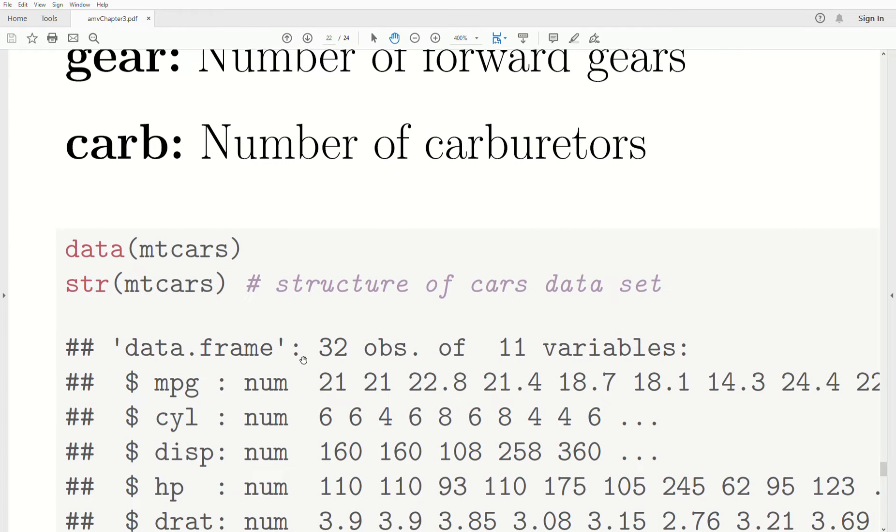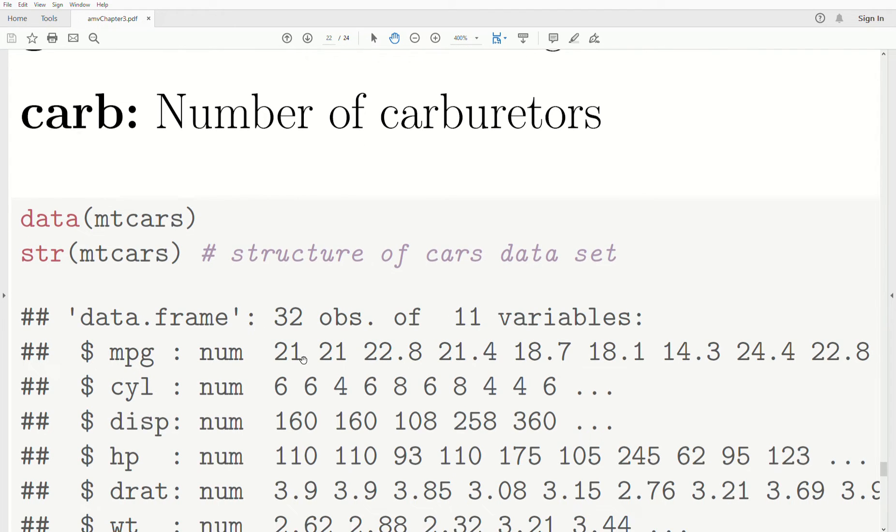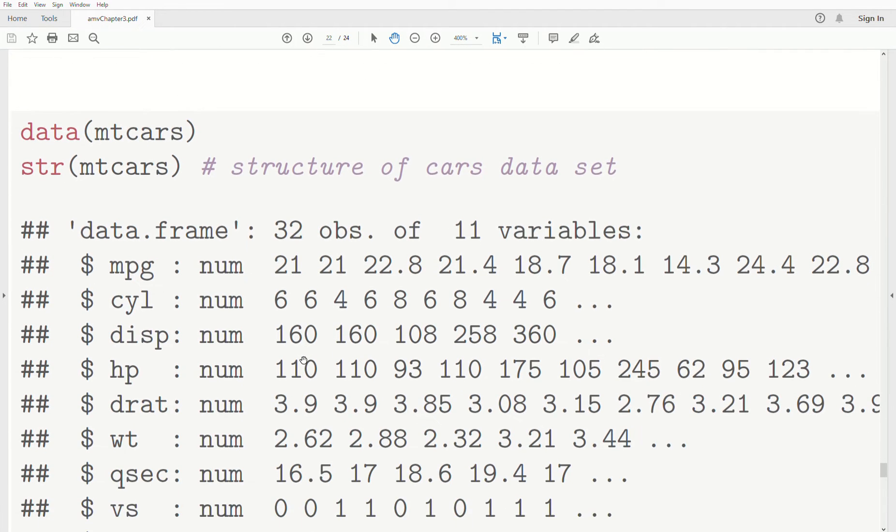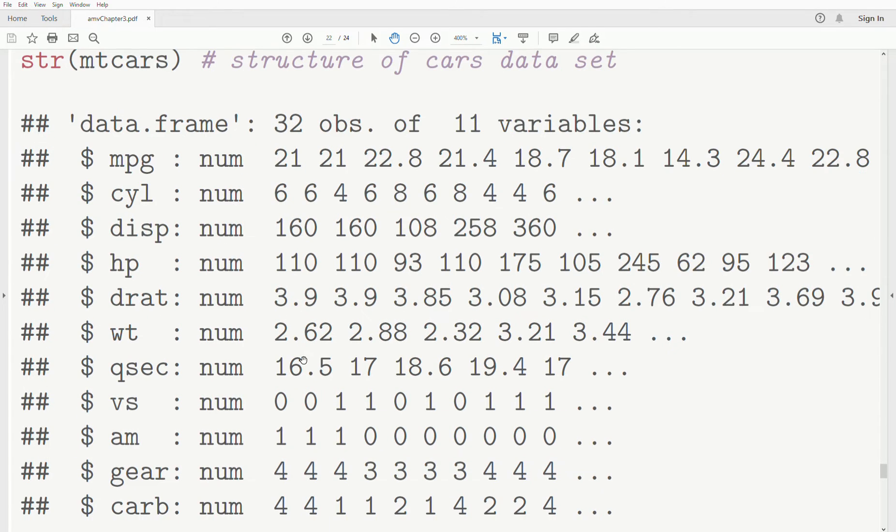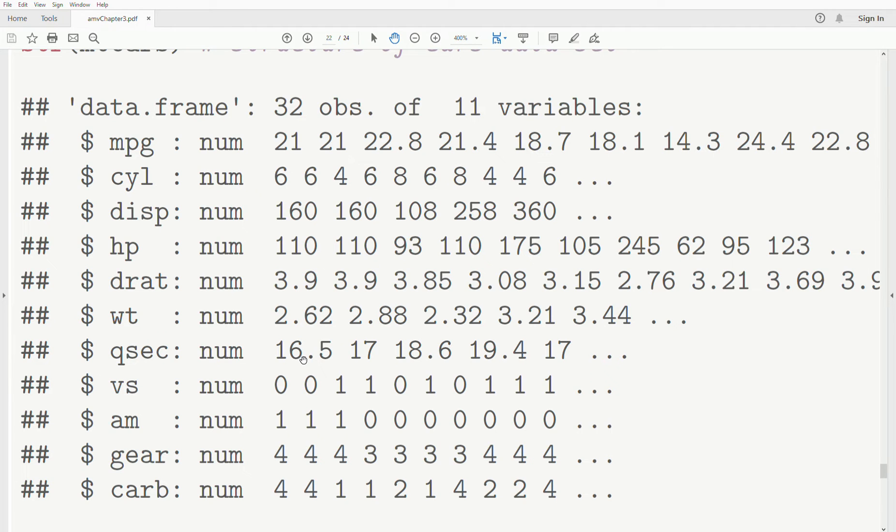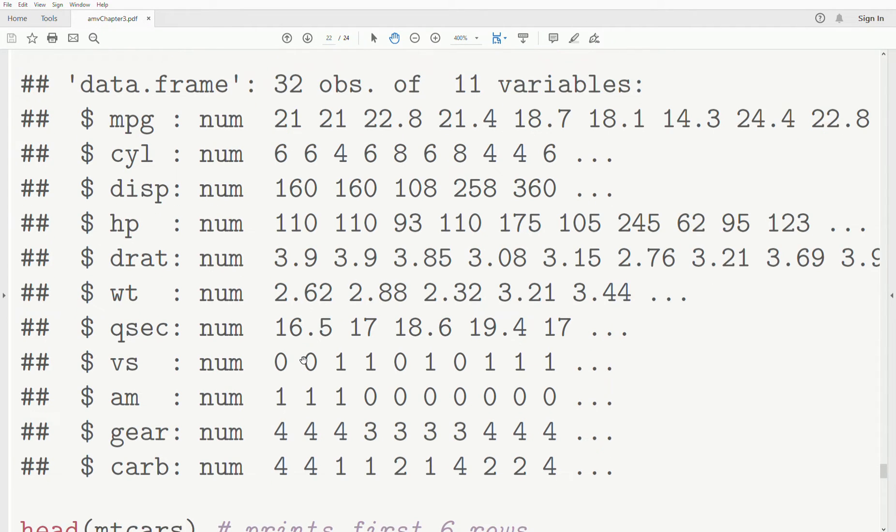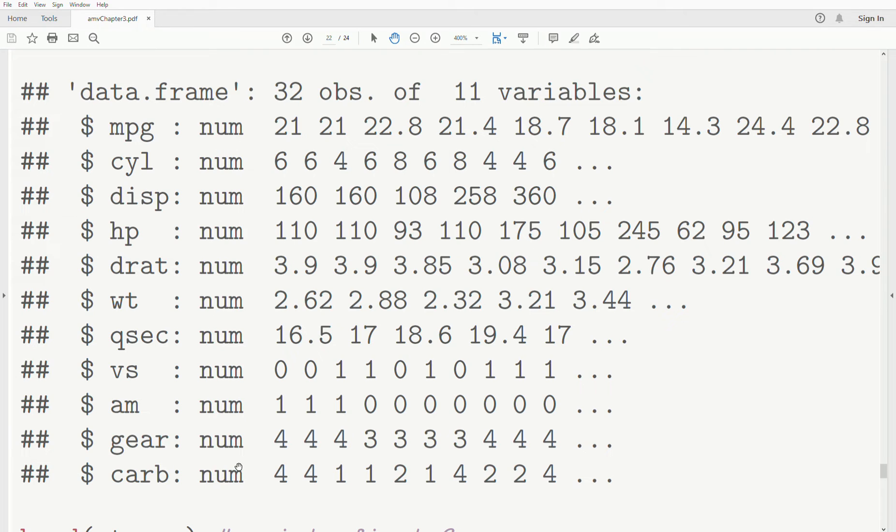We attach the data set using the data command. STR stands for structure. If you want to look at the structure of an object, this is how you do it. Notice it's a data frame. There's 32 observations, 11 variables, and it briefly gives you a description of each of the variables. They're all considered numeric, even though some of them would probably be better described as categorical. So V and S, is it V-shaped or straight? It's 0, 1 values, but really it's categorical.